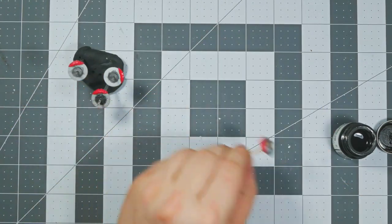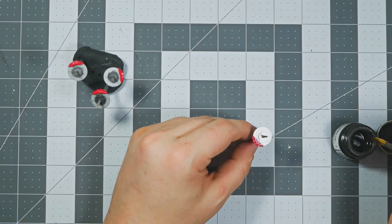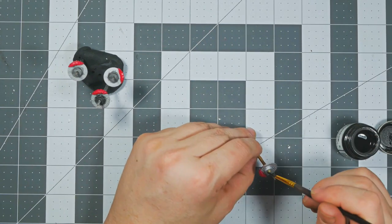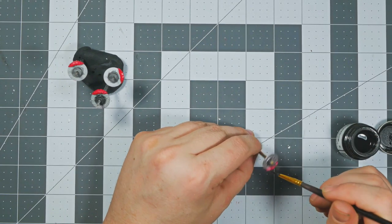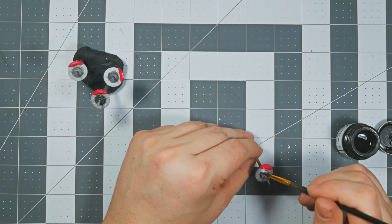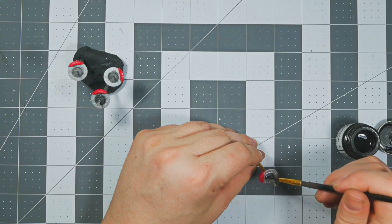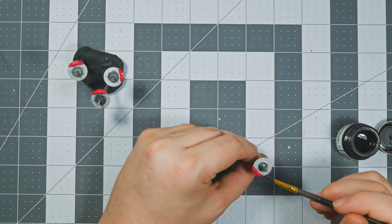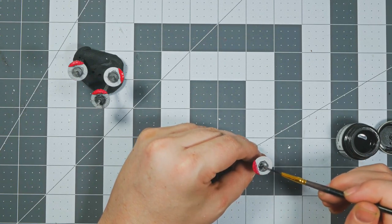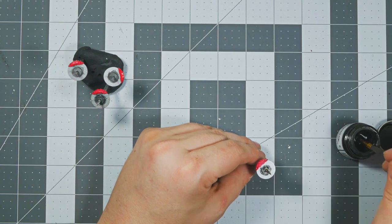But the sealer does help keep the Model Master metalizer stuff from wiping off, and it doesn't dull it down like a flat clear would. Even a flat clear will dull down metalizer and change its look.